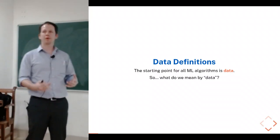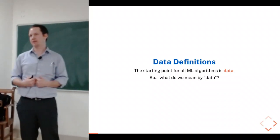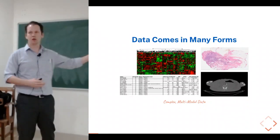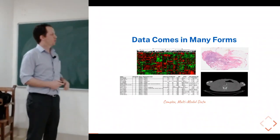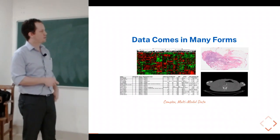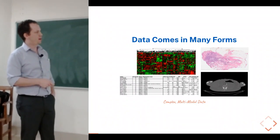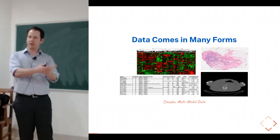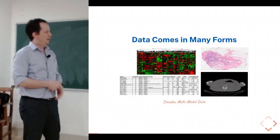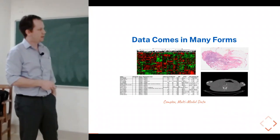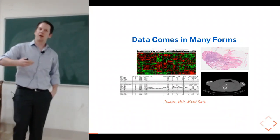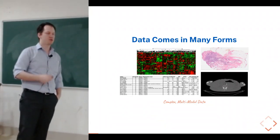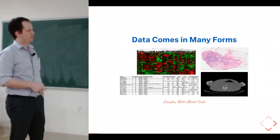It's important to understand what we mean by data. My bias is coming from a healthcare side of things. In some cases you have images like this histopathology image — a tissue section that's been sliced, stained, and put on a glass slide to look at under a microscope. Over here is a CT scan — a non-invasive cross-section showing the density of different tissues in the body. That's a type of radiology.